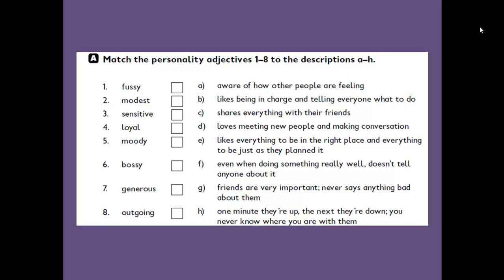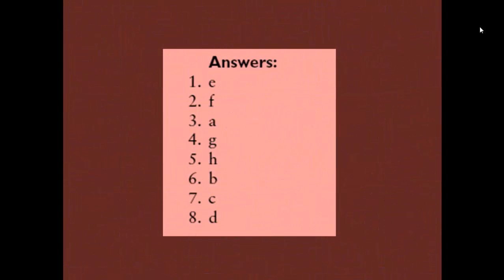Number seven, generous, matches with C — shares everything with their friends. Number eight, outgoing, means loves meeting new people and making conversation — that is D. After doing this exercise, here are the answers — you can copy them in your workbook. We can now conclude lesson number 11, which has the title of Personality. Study it hard, my students, and see you later!